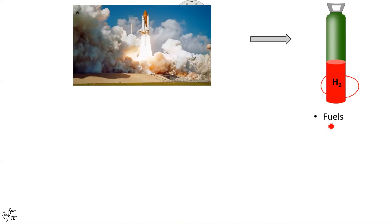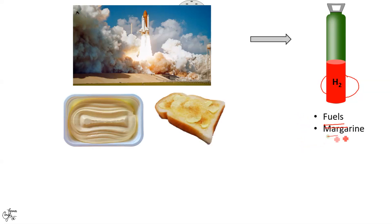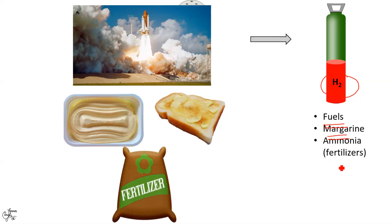Hydrogen finds use as liquid fuel in spacecraft propulsion. You will read about fuel cell in your higher classes. It is also used in the manufacture of margarine, the spread which is used as a substitute for butter. One of the largest use of hydrogen is in the manufacture of ammonia having formula NH3 which is used as fertilizer.